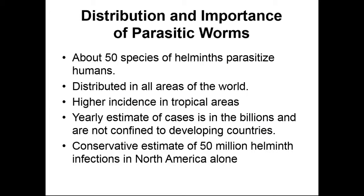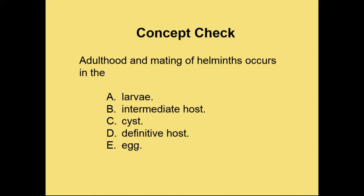There are approximately 50 parasitic helminths that will parasitize humans. They are all over the world, and clearly going to be in higher concentrations in tropical areas because there's more water present, making it easier for eggs to be transported in the external environment. It's estimated that billions of helminth infections occur every year, but most are in developing countries and are not properly diagnosed. Conservative estimates of helminth infection rates in North America alone are in the range of 50 million infections every year.